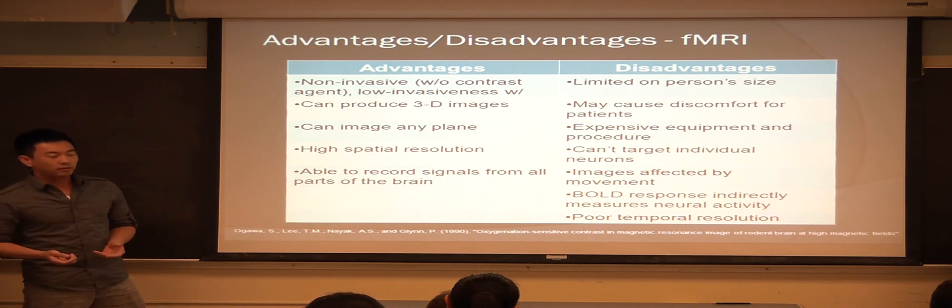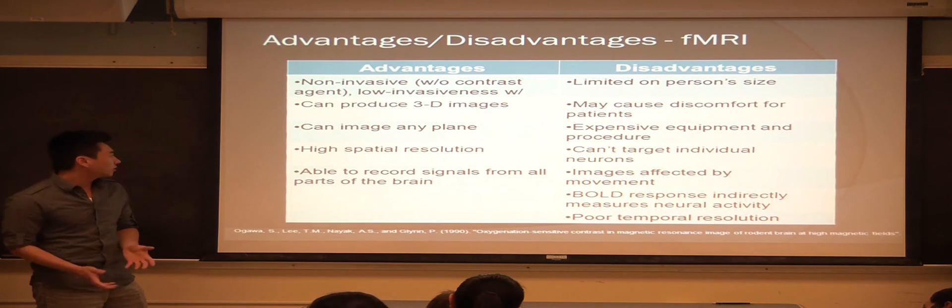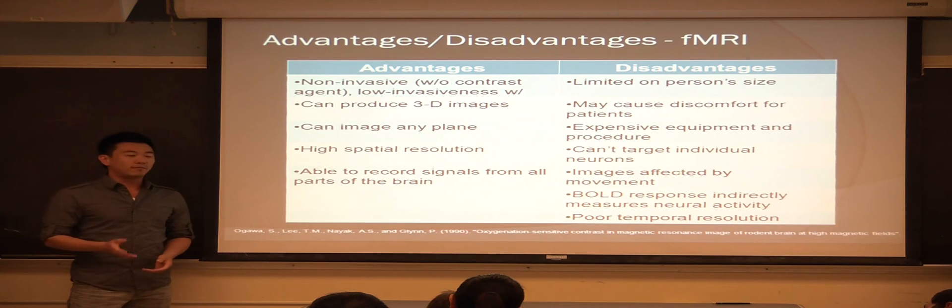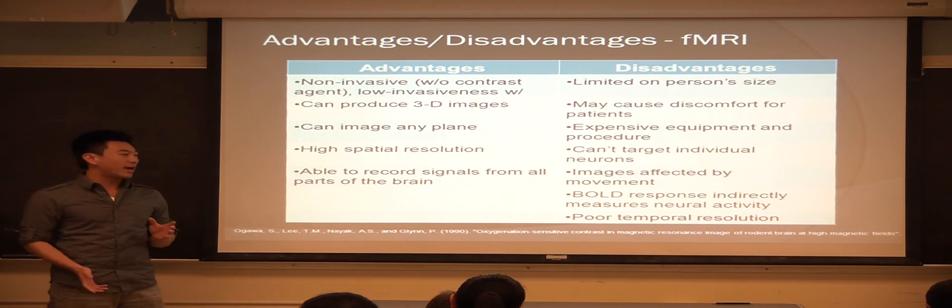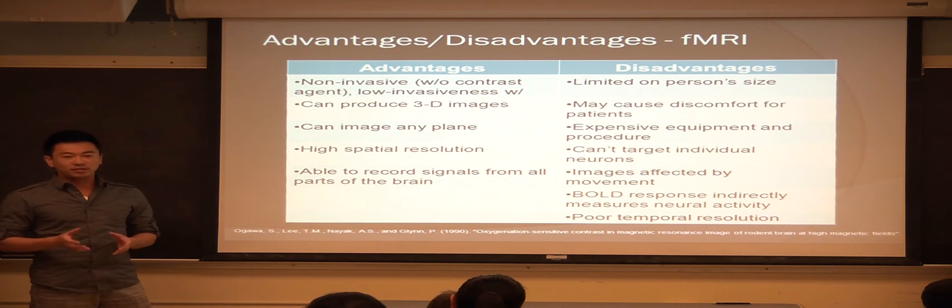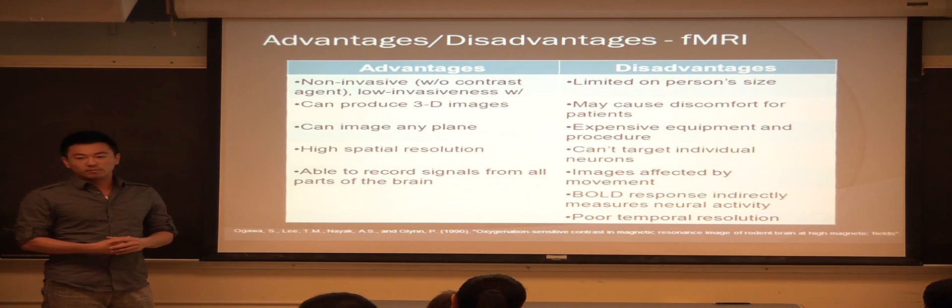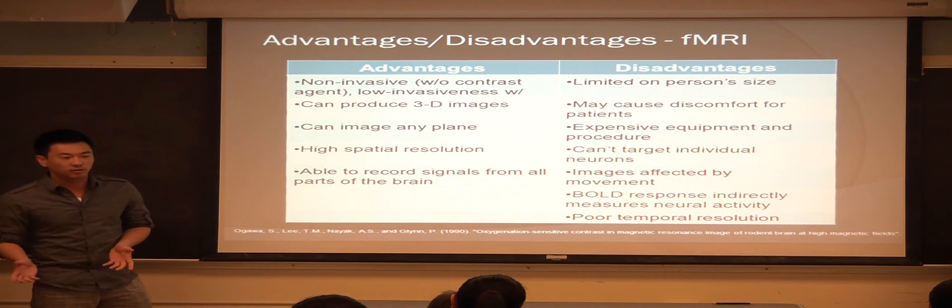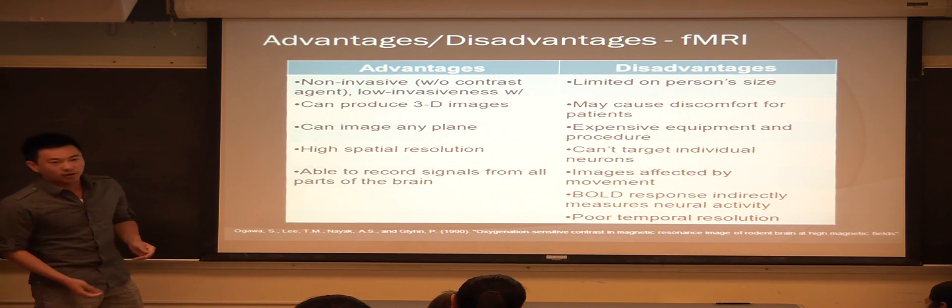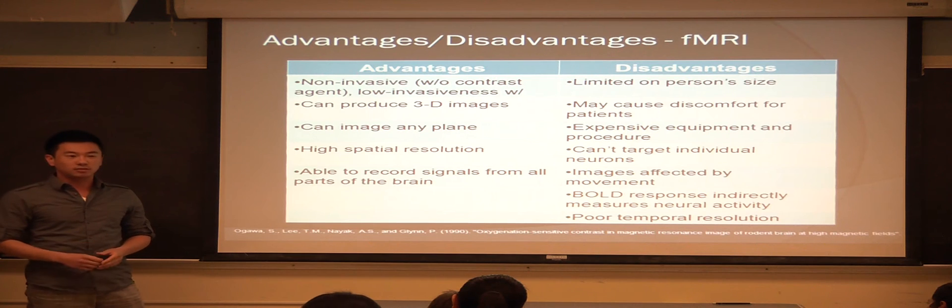If you do want to help get a greater contrast of something you're trying to track, you can inject a contrast agent. Another major advantage of this is that the fMRI can take images on any axis, and this allows it to produce a 3D image which can be exported to a computer for analysis. It has very high spatial resolution, about 2 to 3 millimeters is the average.